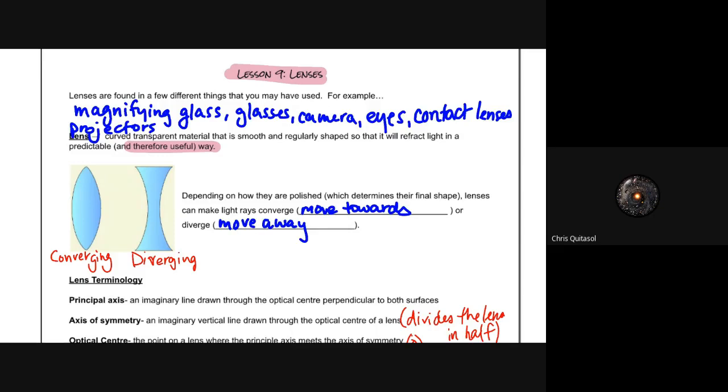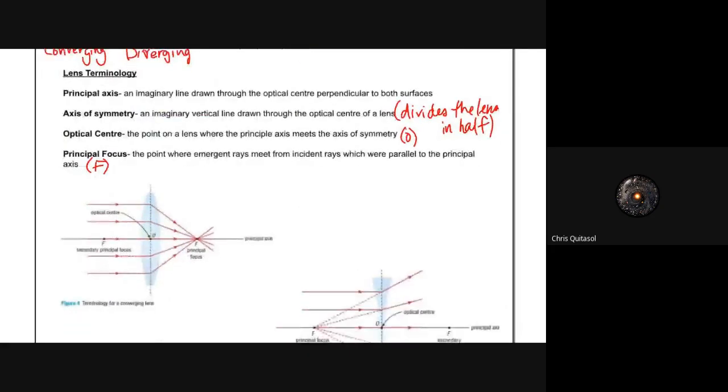We're going to look at some terminology. You'll notice a lot of similarities from when we learned about reflective surfaces. The first being the principal axis, the axis of symmetry, and the principal focus. The principal axis is an imaginary line drawn through the optical center. The axis of symmetry is an imaginary vertical line drawn through the optical center of the lens, just like with our reflective mirrors. It's a little bit different and we'll find out why as we move through this lesson.